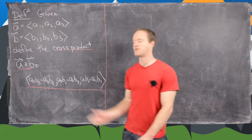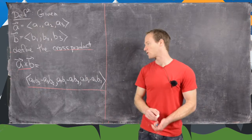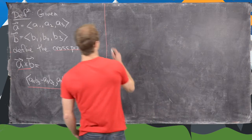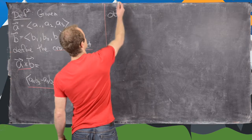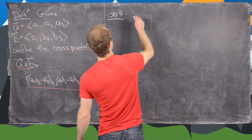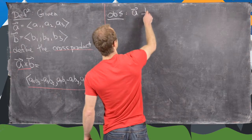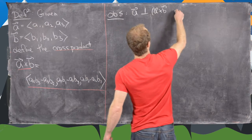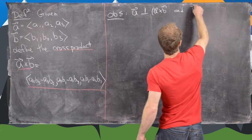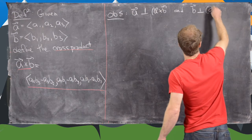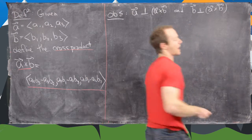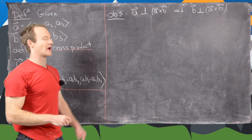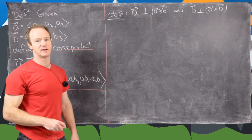This formula is fairly technical, but we're going to have an easier way to calculate it by the end of the video. The first important observation is that a is perpendicular — or orthogonal — to a cross b, and b is also orthogonal to a cross b. This is an important property: the cross product combines two vectors and gives you a vector perpendicular to each.